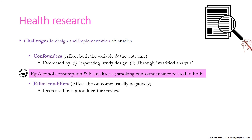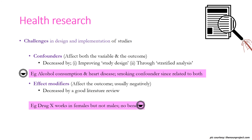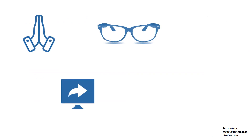Another challenge is the effect modifier, which affects the outcome — usually negatively — and is reduced by thorough literature review and self-study. For example, there is no point doing research on a drug that works only in females with diabetes and not in males, because the results will not be generalizable at all. I hope I have done some justice to the first chapter. Thank you so much and do share the knowledge.